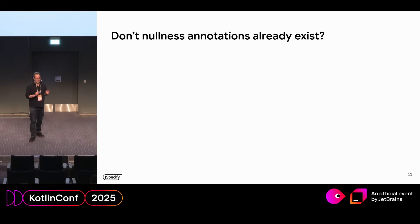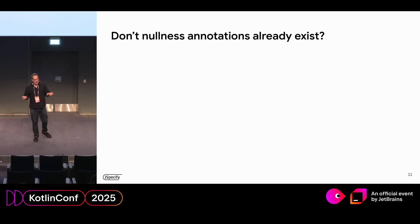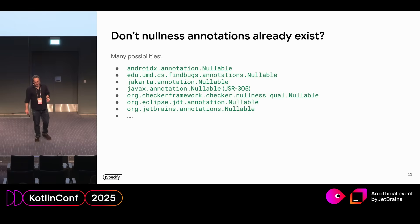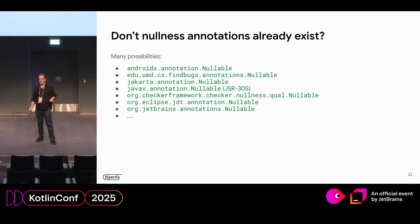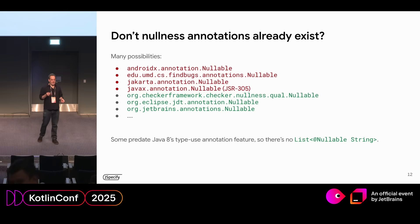You might be asking yourself: don't nullable annotations already exist? You've seen @Nullable before, you've probably seen @NotNull before. Why do we need a new set of annotations? Well, there are a lot of possibilities — these are just some of them, pulled from the Kotlin website. The question is, why don't we just use one of these and use that everywhere? There are a few problems. A lot of these packages' annotations are quite old and predate Java 8, when Java introduced type-use annotations.